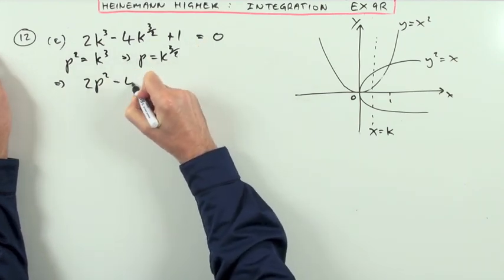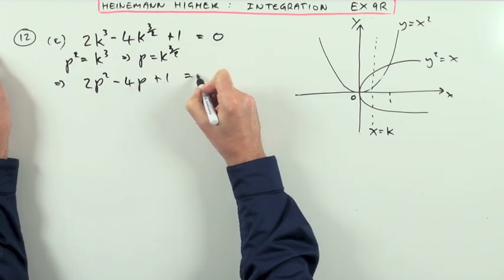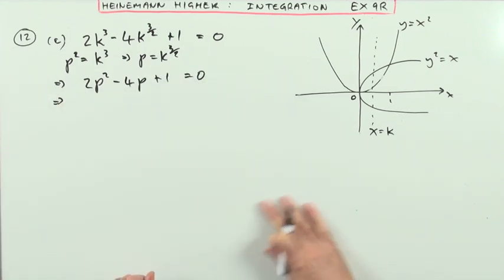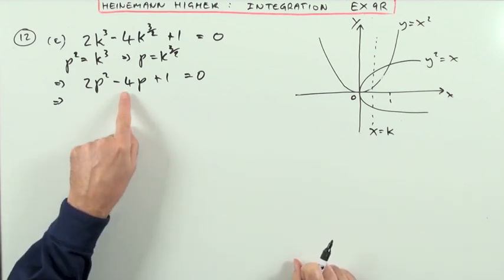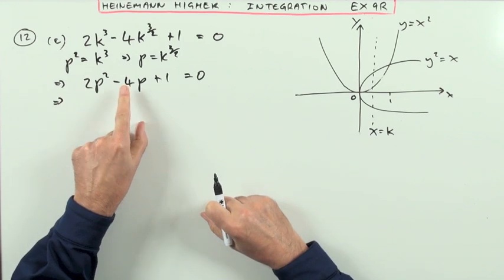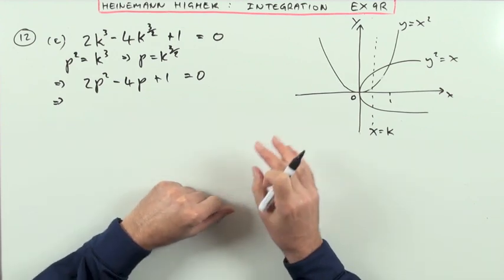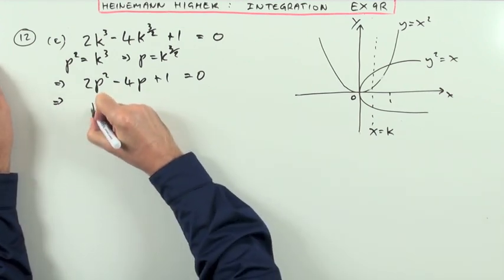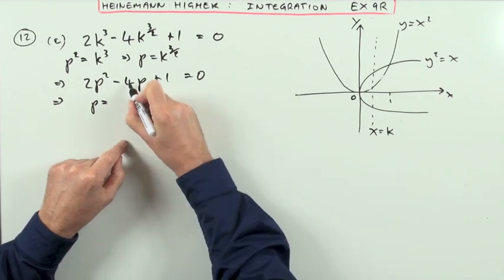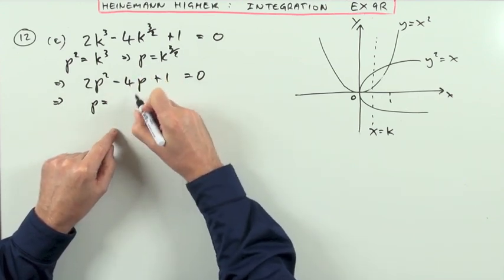So I've got 2p squared minus 4p plus 1 equals 0. There's a case of factorize it. If it does factorize, 16, discriminant, check if it factorizes. 16 take away 8 times 1 is 8. 8 is not a perfect square. It doesn't factorize. I'll have to use the formula.